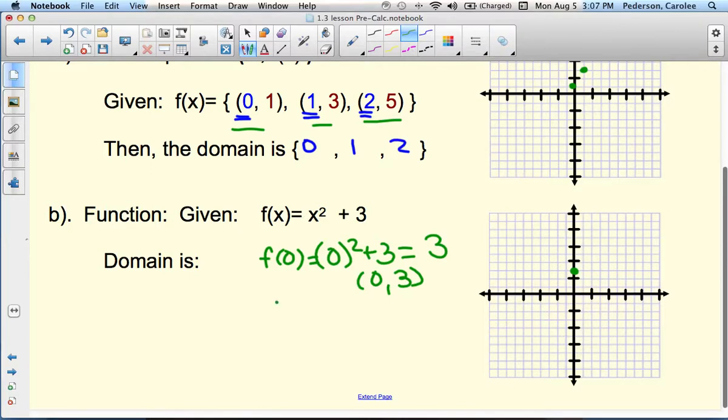Then let's plug in 1. So we replace the x with 1. So 1 times 1 is 1, plus 3 is 4. So we get the ordered pair over 1, up 4.